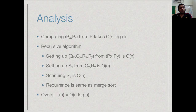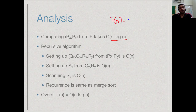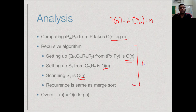We have a non-recursive part: first computing Px and Py takes O(n log n) time. Then the recursive problem divides n points into two sets of n/2, giving the recurrence T(n) = 2T(n/2) + O(n), since all the setup and combining time is linear. This is exactly the recurrence for merge sort. So the recursive part is also O(n log n), and overall this algorithm is O(n log n).